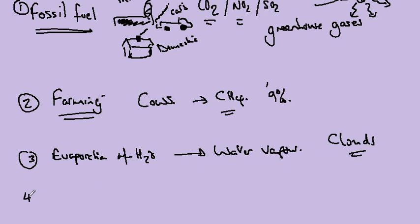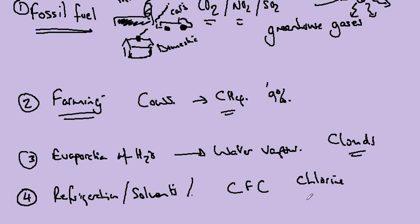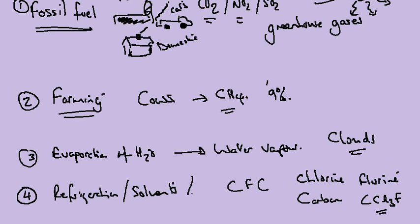And the fourth greenhouse effect we want to consider is refrigeration, solvents, and propellants. This is the chlorofluorocarbons, a combination of chlorine, carbon, and fluorine such as CCl3F. These molecules are well associated with the absorption of ultraviolet light and catalyzing the breakdown of the ozone layer.